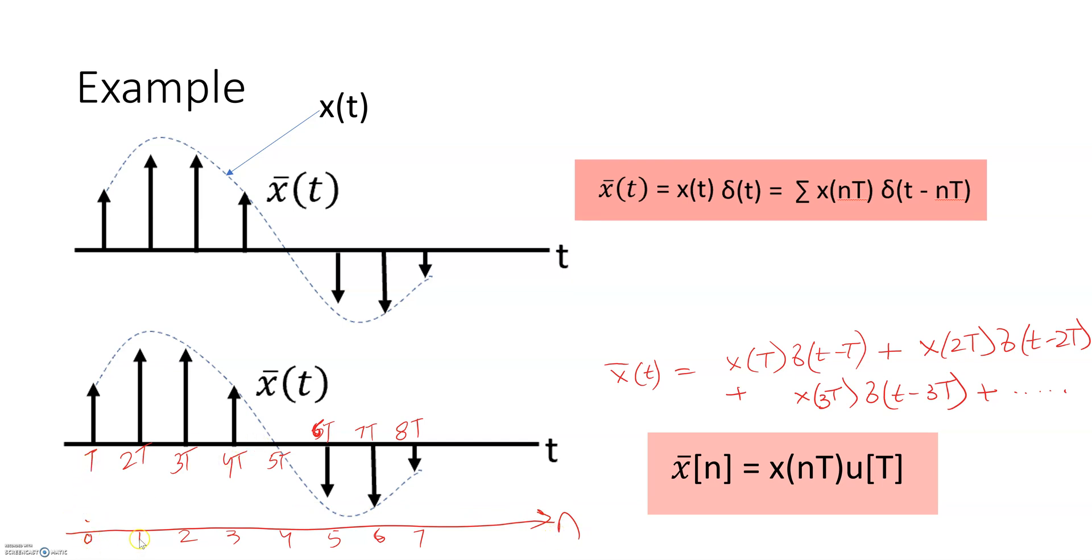We can also define this signal by putting it on the axis that gives us the number of samples. So instead of saying time here, now these are individual samples. This is the first sample, second sample, third sample, fourth sample, and so on. Therefore, we can rewrite this equation that is the definition of the sampled signal as x[n] = x(nT)u[T]. What that really means is that the value of the nth sample of the sampled signal is really the value of the original signal calculated at time nT.